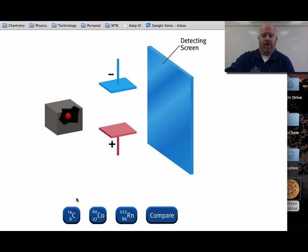We have three different isotopes here: carbon-14, cobalt-60, and radon-222. We're going to click on each one of those and show what happens to these as they decay.